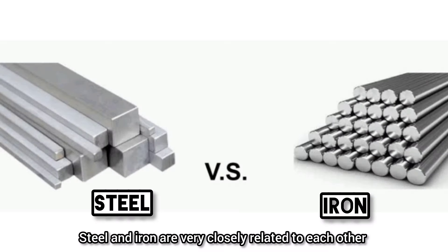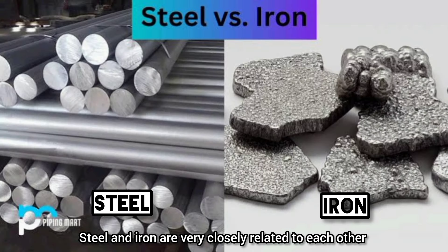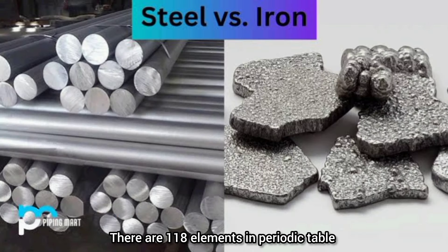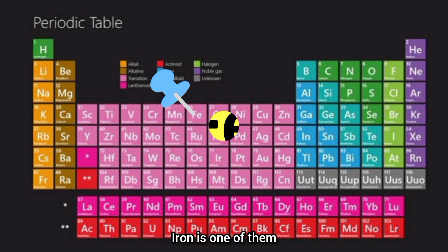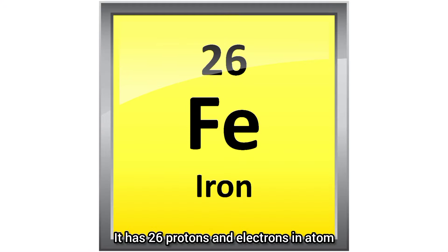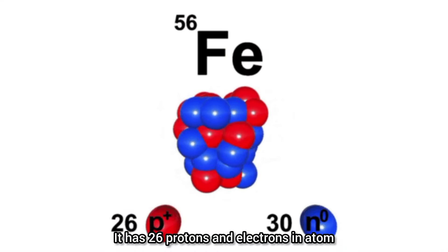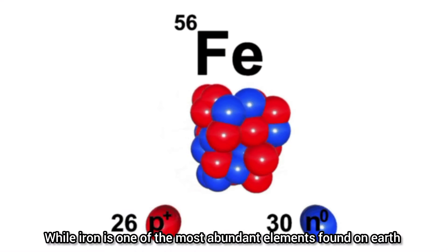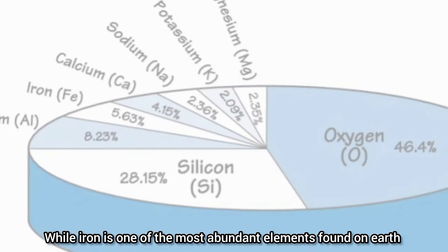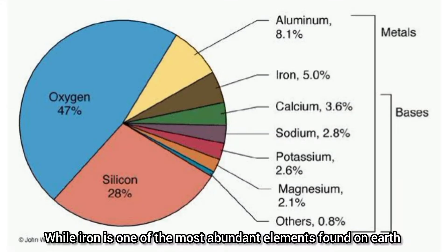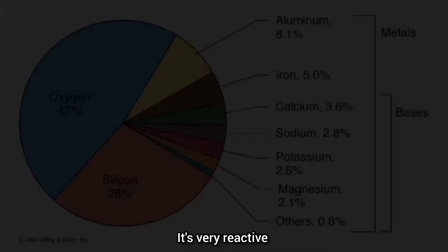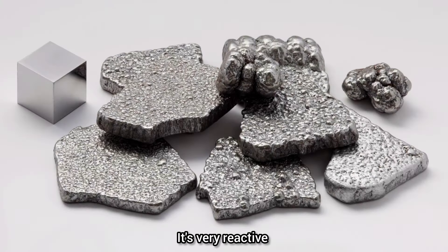Steel and iron are very closely related to each other. There are 118 elements in the periodic table, and iron is one of them. It has 26 electrons and 26 protons in its atom. While iron is one of the most abundant elements found on earth, it is rarely found in its purest form, as it is very reactive.